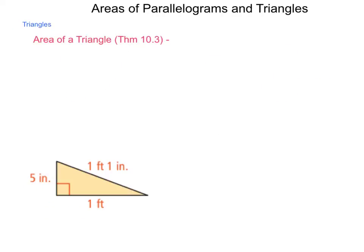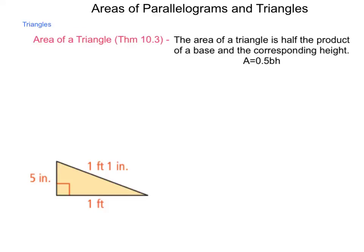The area of a triangle, theorem 10.3, reads: the area of a triangle is half the product of a base and the corresponding height or A equals 0.5 bh or just one half bh and the reason for this is that if we start with a random triangle